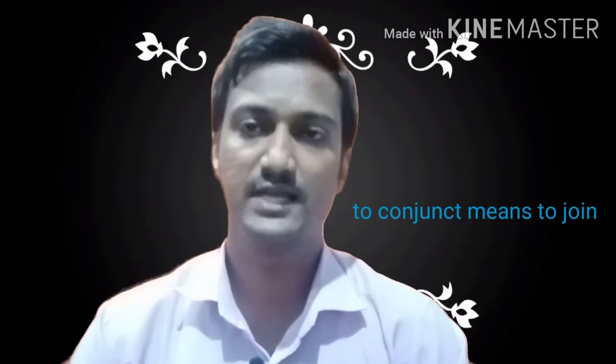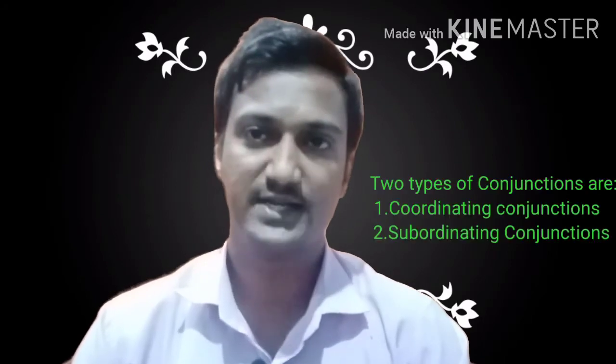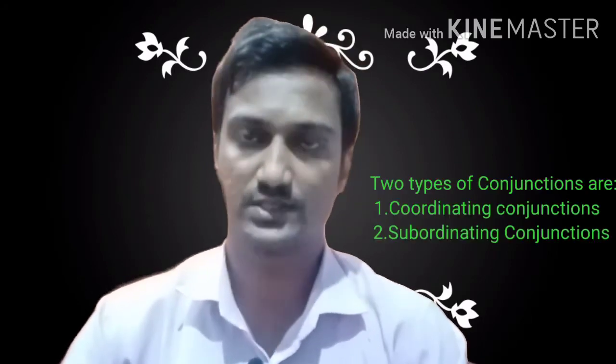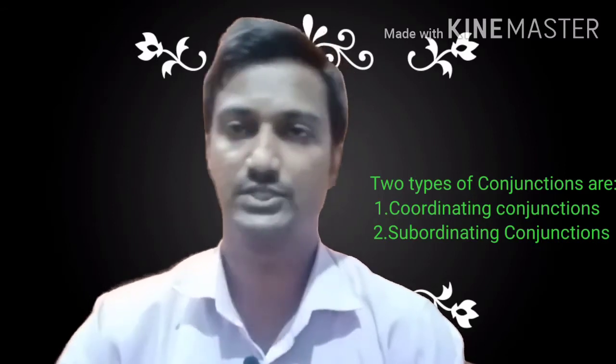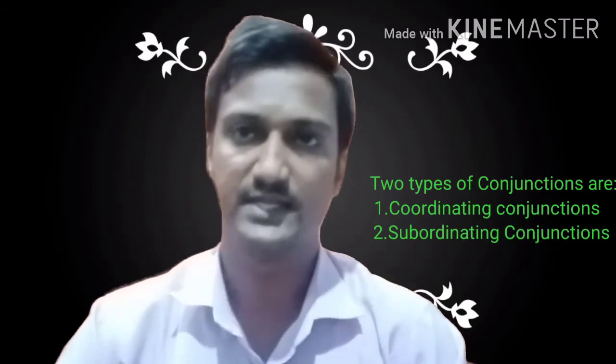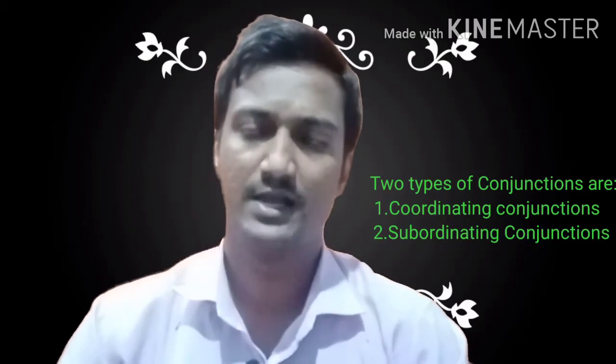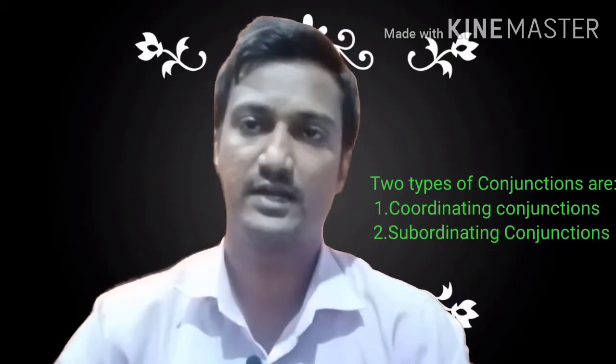Now, conjunctions are of two types: subordinating conjunctions and coordinating conjunctions. We will see what can be done in the case of each. Let us begin our lecture by taking some examples of coordinating conjunctions.